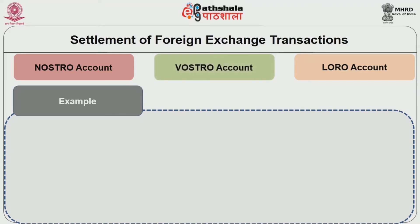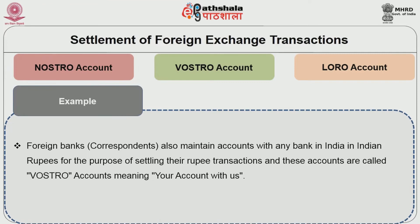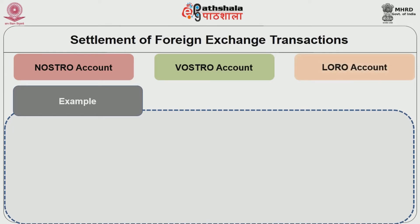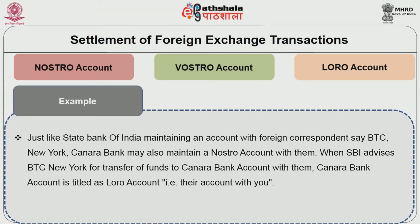The second account is the Vostro account, meaning 'your account with us.' Foreign bank correspondents maintain accounts with banks in India in Indian rupees for the purpose of settling their rupee transactions — these are called Vostro accounts. The third account is the Loro account, meaning 'their account with them.' For example, just as State Bank of India maintains an account with foreign correspondents like BTZ, New York, Kanra Bank may also maintain a Nostro account with them. When SBI advises BTZ New York to transfer funds to Kanra Bank's account, Kanra Bank's account is titled as the Loro account — their account with you.